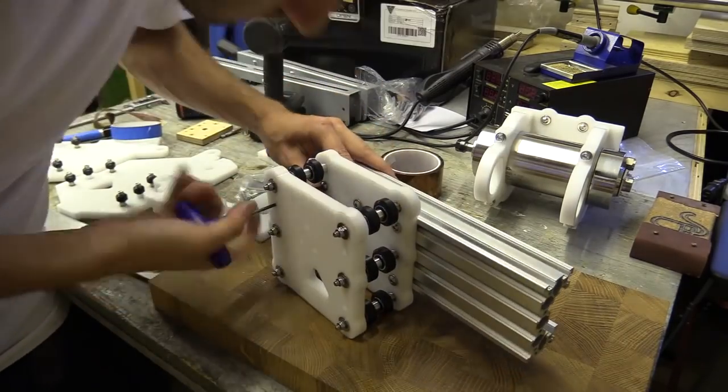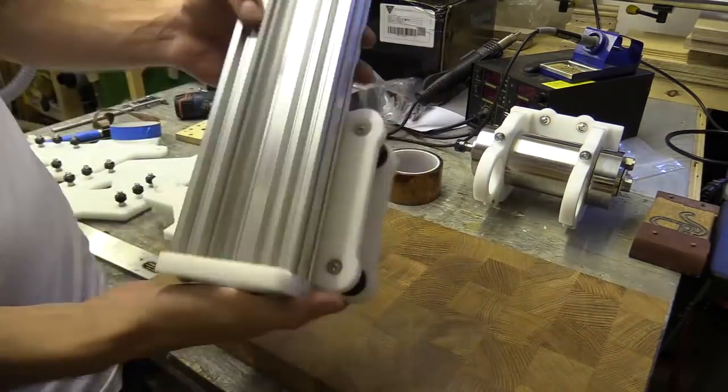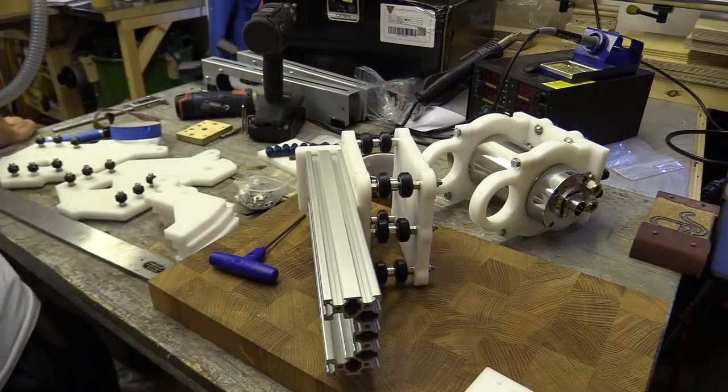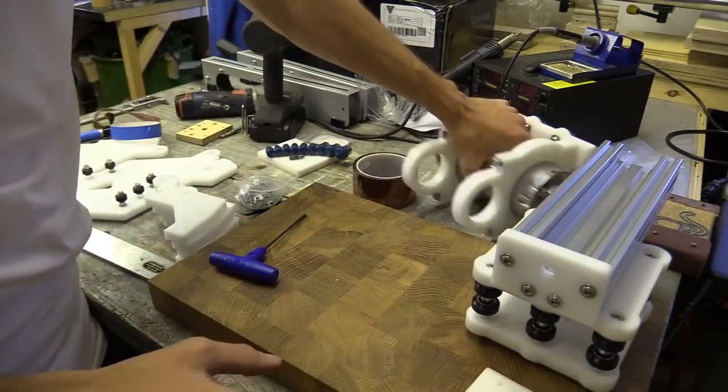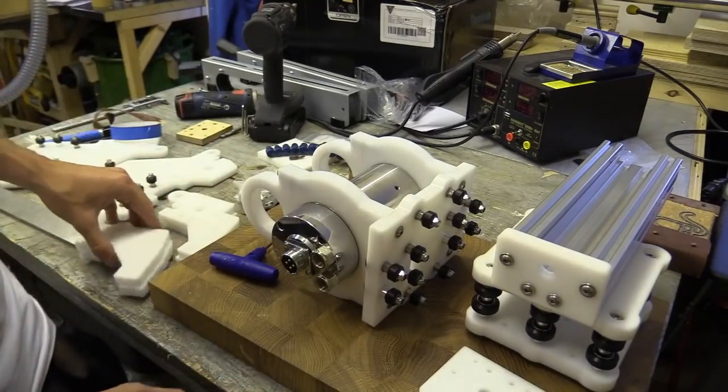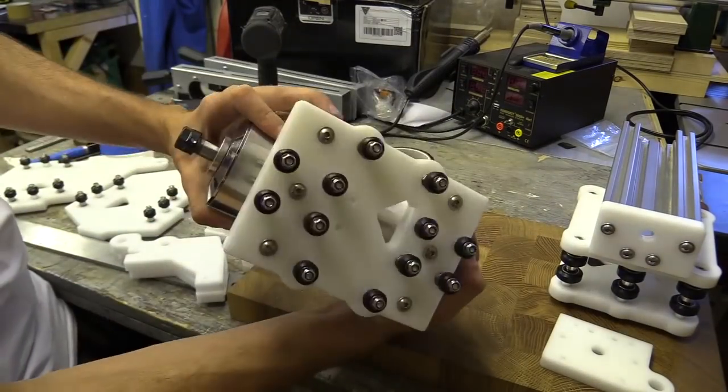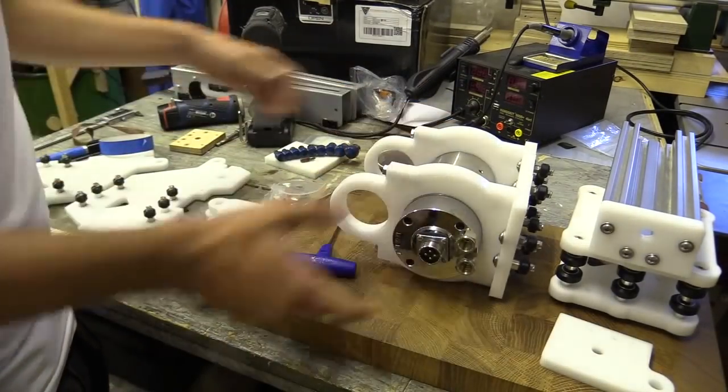In the next video I will begin dismantling the CNC machine with the plywood plates and replacing those with the acetal ones that I've just cut. And as usual don't forget to sacrifice a thumb to the algorithm gods and let me know your thoughts in the comments section below. Thanks again.